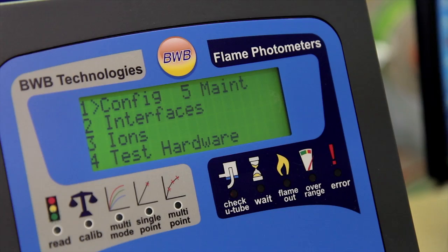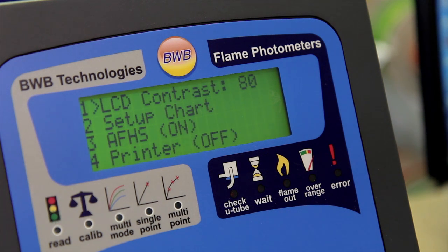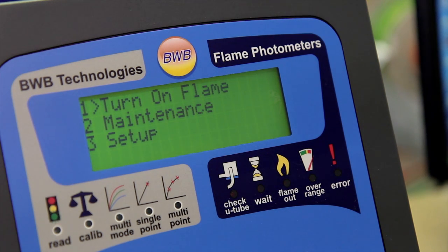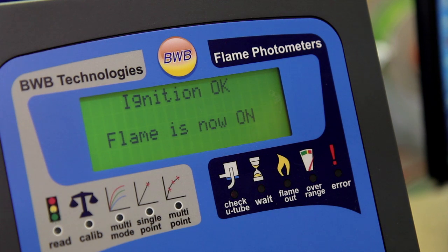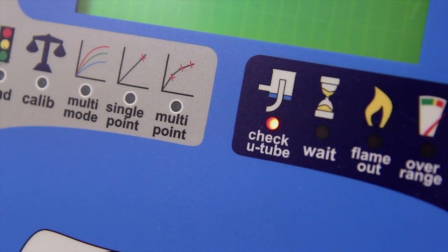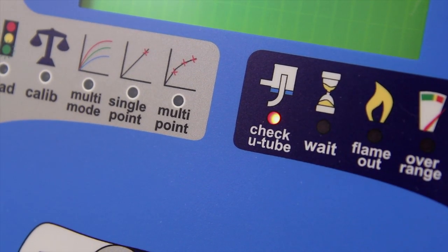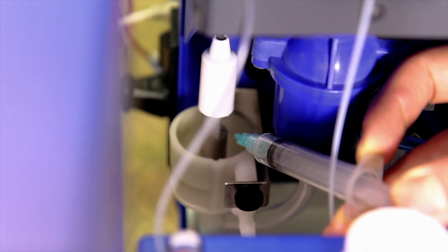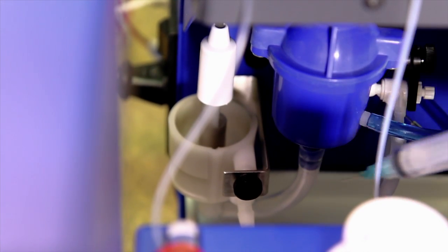An initialization is required to ensure the flame photometer is communicating with the AFHS. Ensure that the AFHS unit is on in the interface menu and that the flame is lit. If the flame fails to light, check the check U-tube indicator on the front of the instrument. If it is red, add water to the U-tube with the syringe until the light turns off.